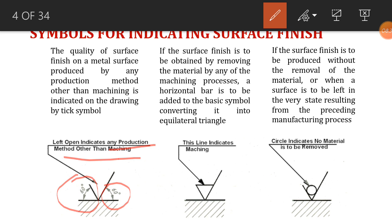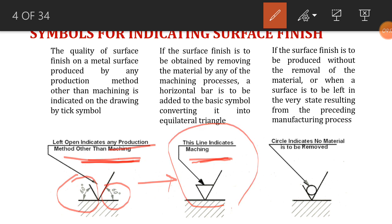The open arrow symbol indicates that any product and any method other than machining can be used to produce this surface — for example, casting or forging. If we change the symbol from the open arrow to a filled triangle, that indicates that we are going to use only a machining process — meaning material removal — such as turning, milling, or grinding, where metal is cut and material is removed.